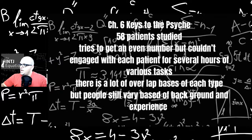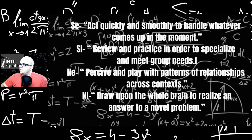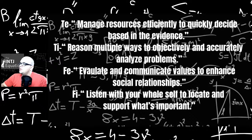Chapter six, keys to the psyche. Fifty-eight patients were studied. This is kind of a breakdown of his lab work here, his experiment. Tries to get an even number of types, but couldn't, obviously, because some types are more interested in typology than others. Engage with each patient several hours of various tasks. There are a lot of overlap bases of each type, but still people based on background and experience. They're all college age, 18 to 25. All right-handed, except for one. And nobody is on drugs, except one Prozac user. Here's definitions of the functions: SE, act quickly and smoothly to handle whatever comes up in a moment. SI, review and practice in order to specialize and meet group needs. NE, perceive and play with patterns and relationships across contexts, and draw upon the whole brain to realize an answer to a novel problem. NI. TE, manage resources efficiently to quickly decide based on the evidence. TI, reason multiple ways objectively and accurately analyze problems. FE, evaluate and communicate values to enhance social relationships. FI, listen with your whole self to locate and support what's important.